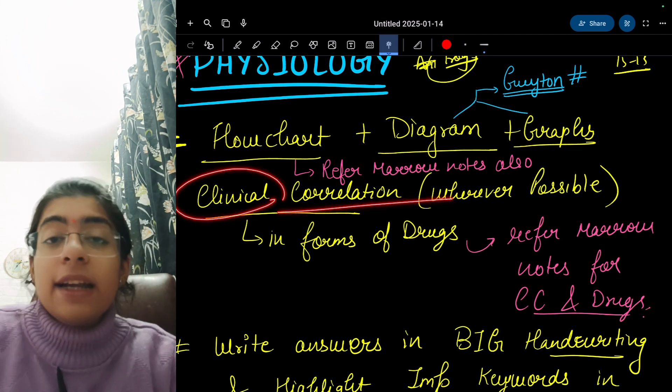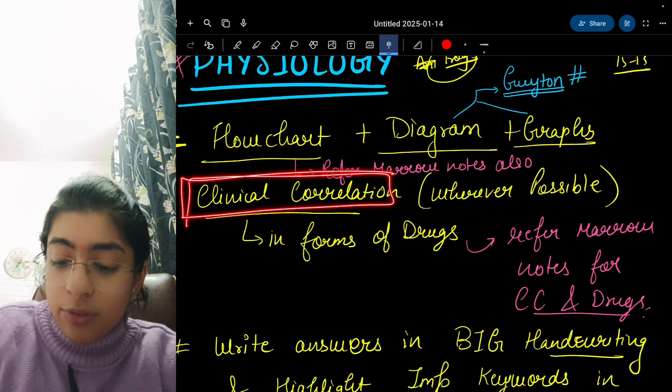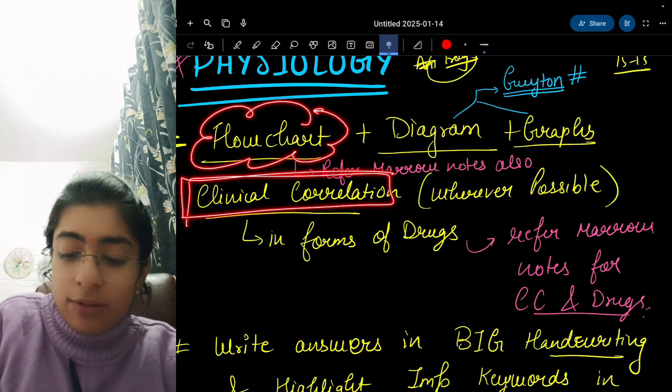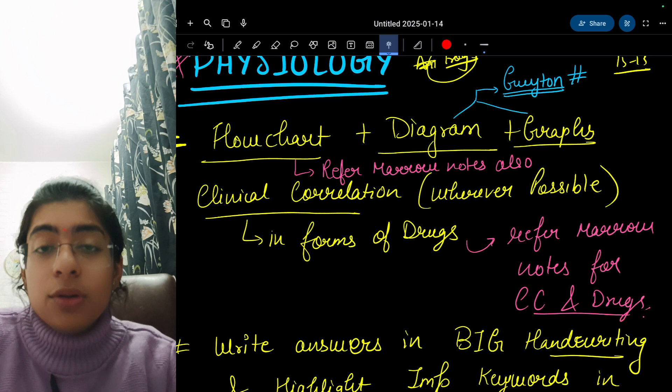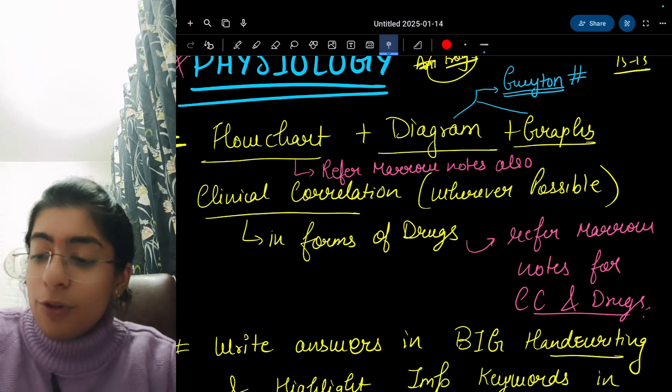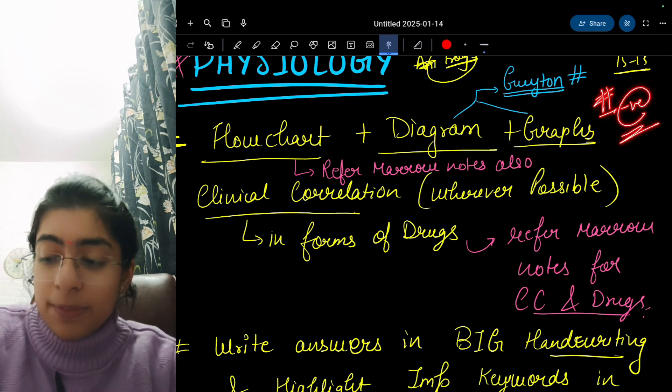Clinical correlation - write wherever possible and always draw a box around it, you can draw a cloud around it or whatever you like to highlight what you want to emphasize. What you don't know exactly, do not write because that is a negative point.